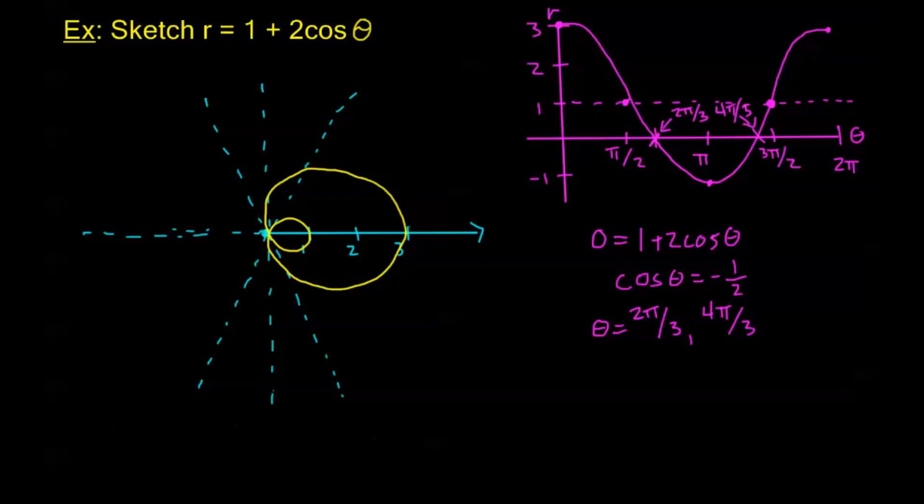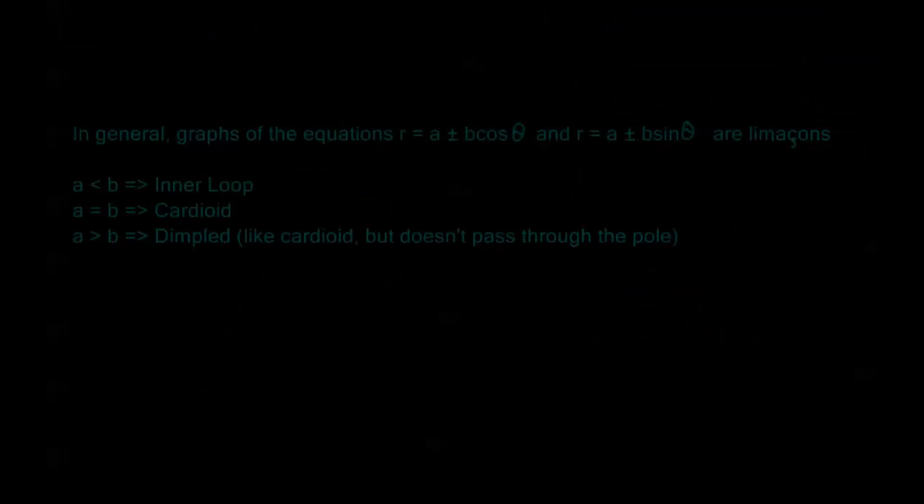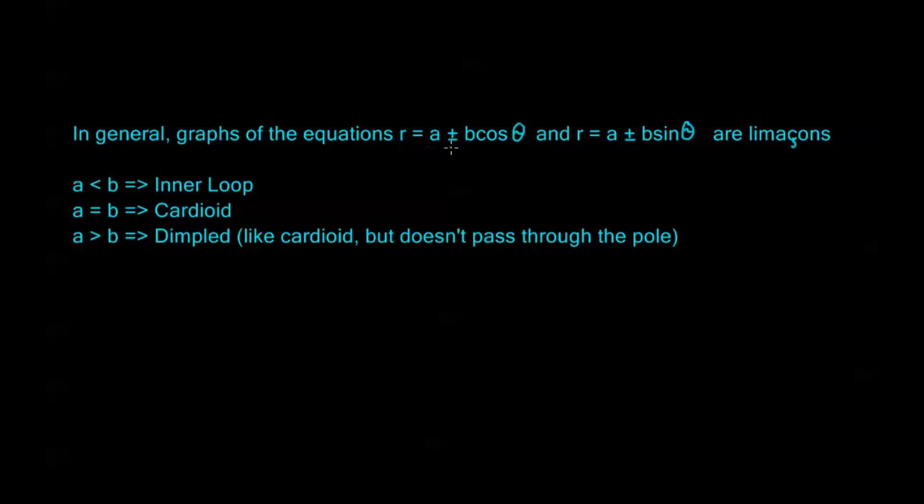But in general, a limouson is going to occur anytime we have the equations r = a ± b*cos(θ) or r = a ± b*sin(θ). These are all limousons.